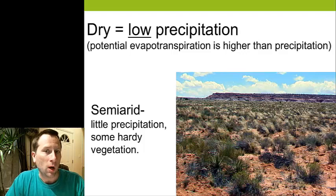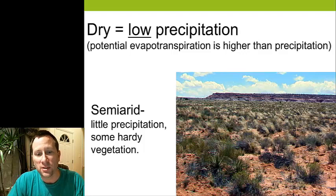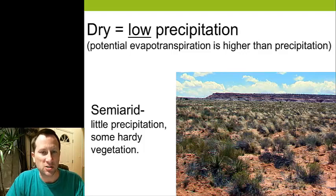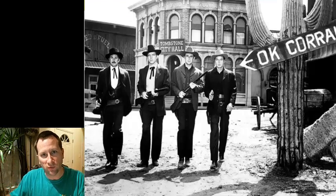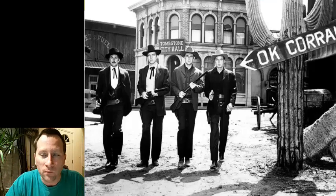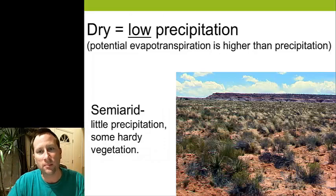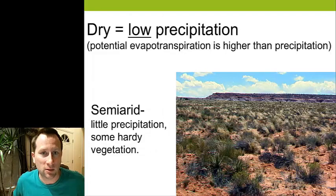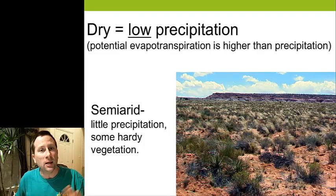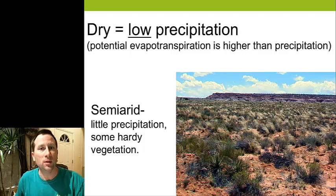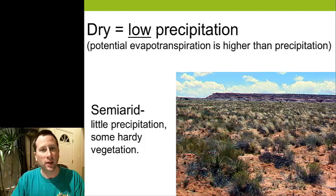Our first dry climate is semi-arid. This is a place where they have a little precipitation each year, and there's some hardy vegetation — cactuses, yucca, scrub brush, those bushes that roll across just before there's a gunfight at the O.K. Corral. That's the type of vegetation you'd see in a semi-arid climate. If there were more water, there would be more plants and more evaporation, but there's just not enough water, so it's a dry climate.